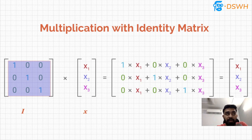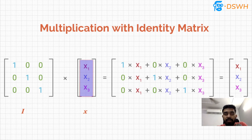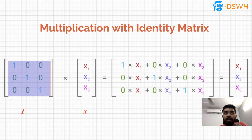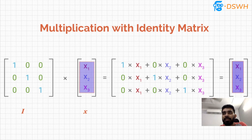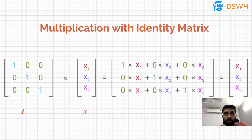It's kind of like one in scalars — anything you multiply with one stays just the same. So in the n-dimensional space, any matrix or vector multiplied with an identity matrix stays just the same; there is no change. If you look at this example, we have a 3×3 identity matrix multiplied with an X vector of shape 3×1, and the output stays just the same as the X vector.